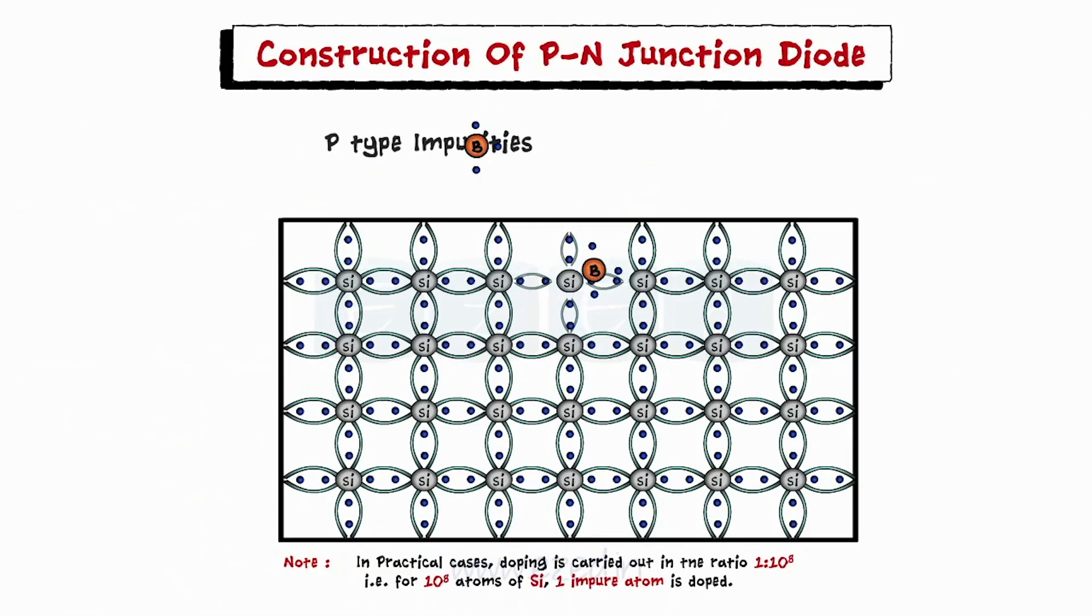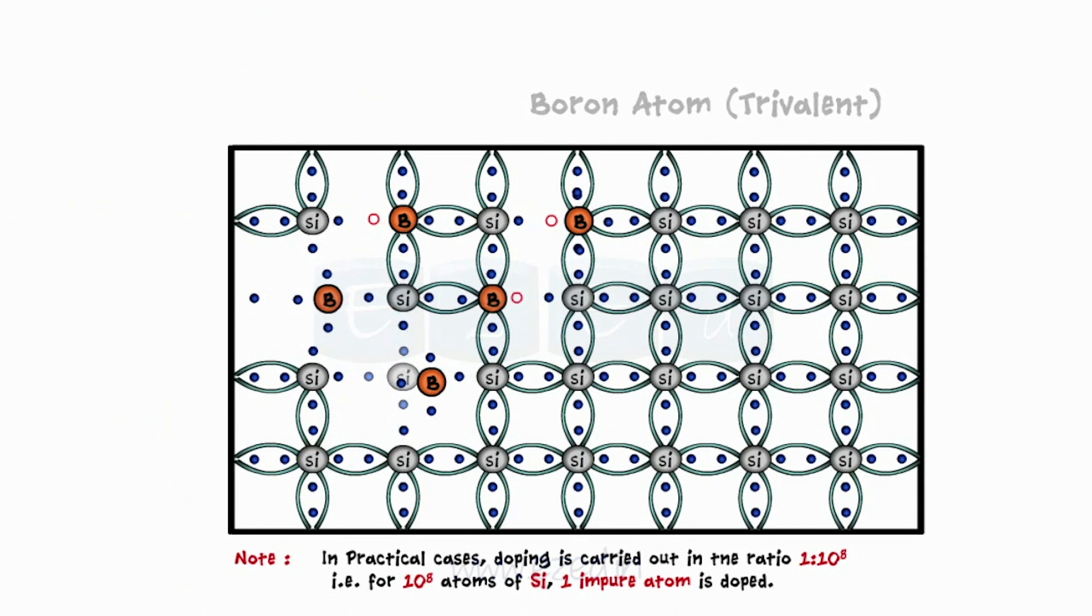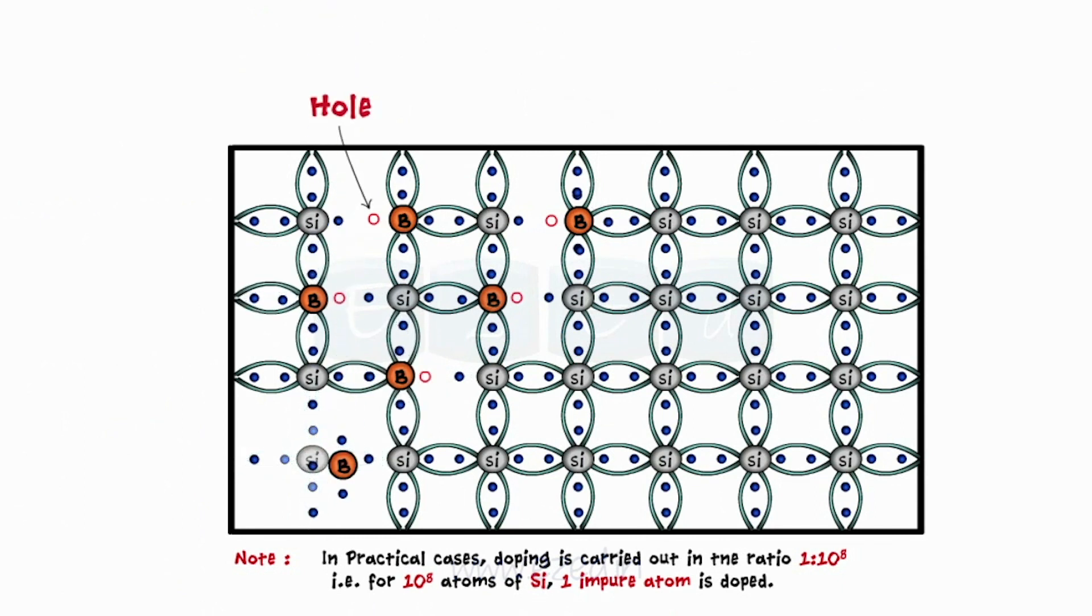We dope P-type impurities like boron on the left half of one slice. Boron atom being trivalent accepts one electron from the neighboring silicon atom and creates a vacancy or hole in the silicon structure. As boron accepts one electron, it loses its neutrality and becomes negatively charged ion.